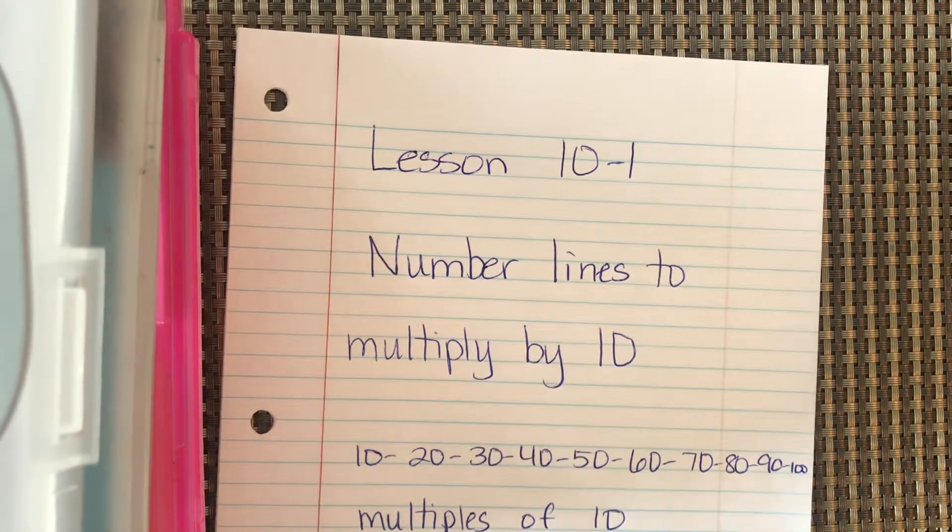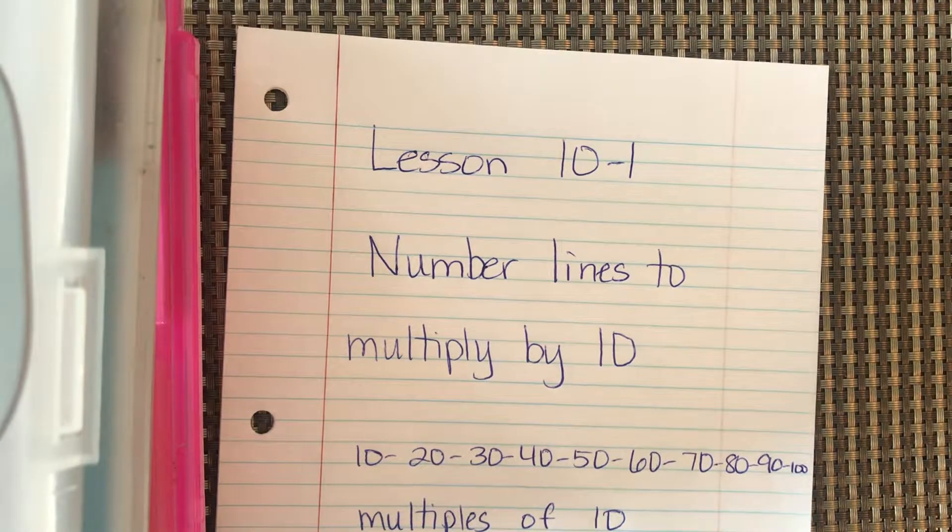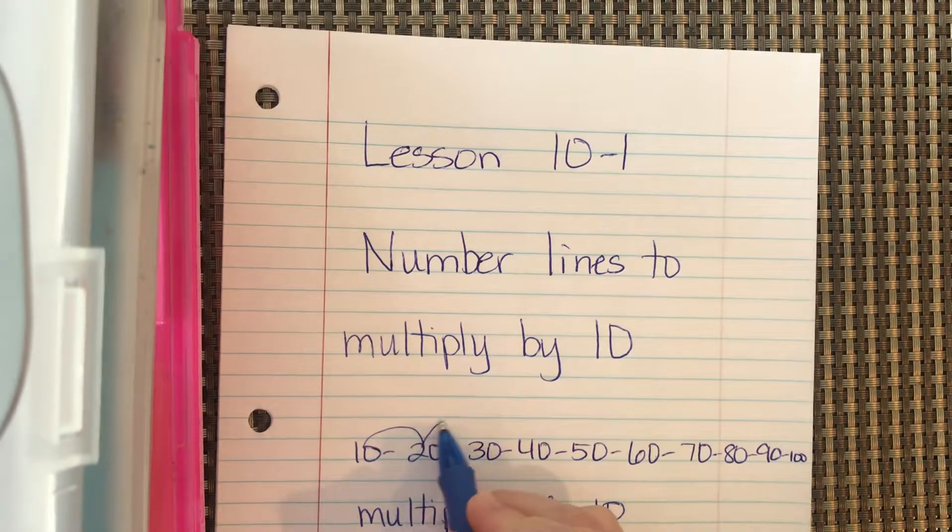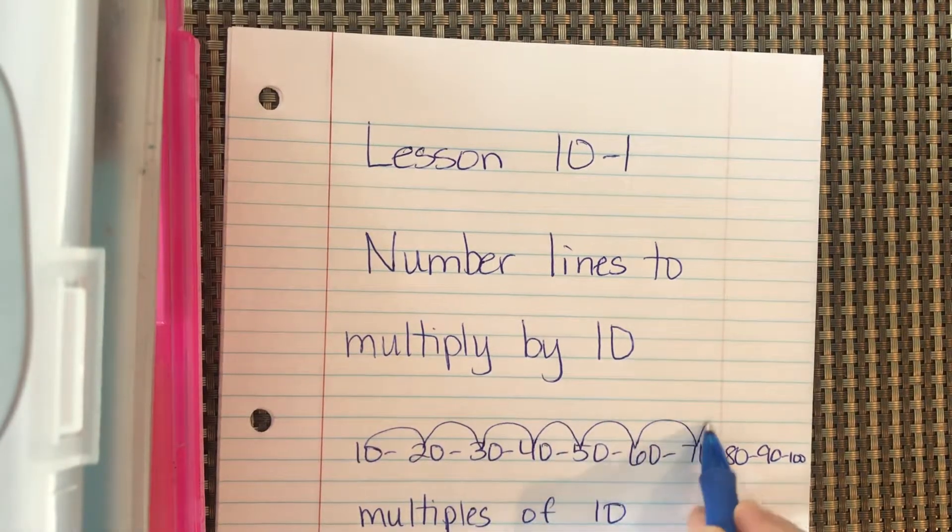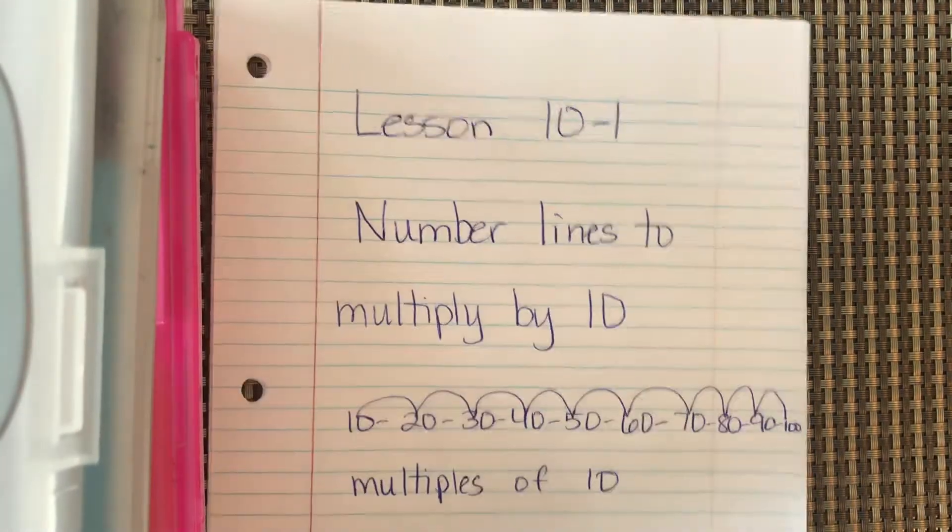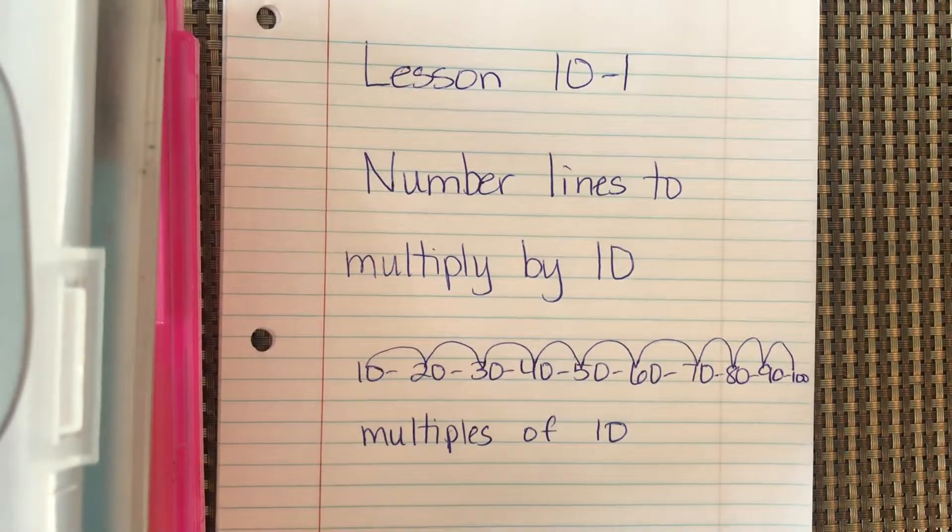Just like when we're multiplying by a number, the products are considered the multiples. So if we're counting by 10s—10, 20, 30, 40, 50, 60, 70, 80, 90, 100—the numbers that we're saying are the multiples of 10.